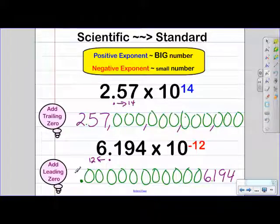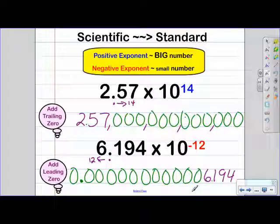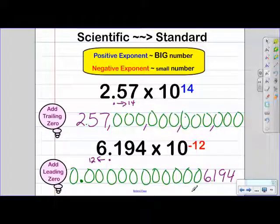I'd like to add a zero in the front just so that it traps in that decimal there. We don't need to add commas, so we are actually done converting this into standard notation. Thank you for watching another episode of Wagstaff Explains. Now you know how to convert to scientific notation.